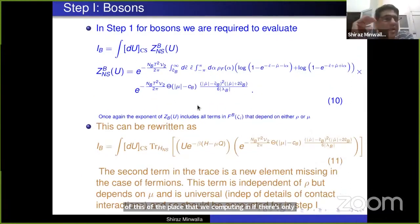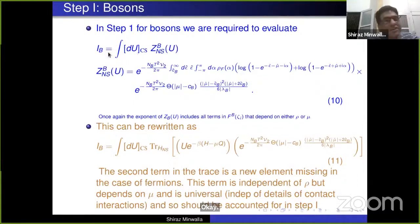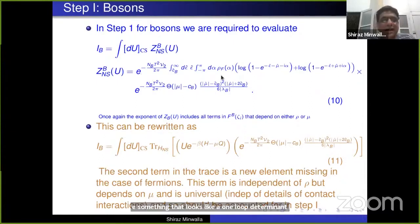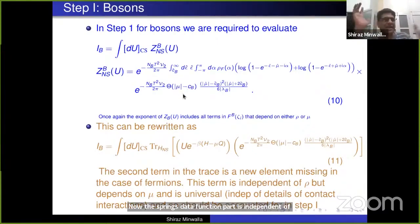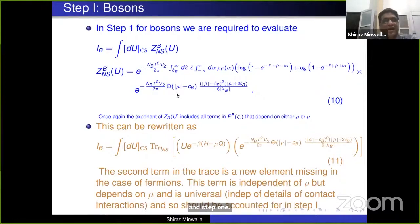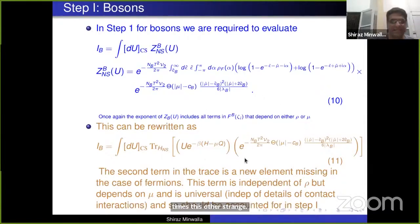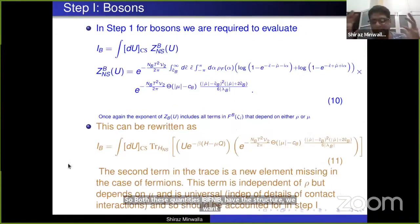For bosons, we similarly need to integrate over holonomies with the modified Haar measure, of something that looks like a one-loop determinant, plus this extra piece with the strange theta function. The theta function part is independent of ρ yet is universal — it doesn't depend on the contact interactions of the theory but does depend on the chemical potential. Both I_F and I_B have a common structure, and we want to understand what that structure means.